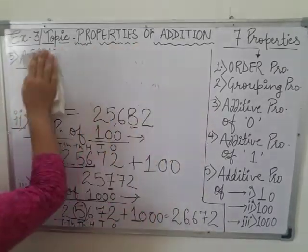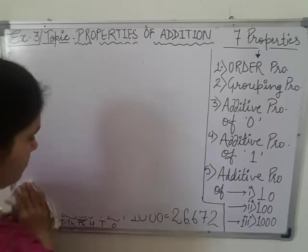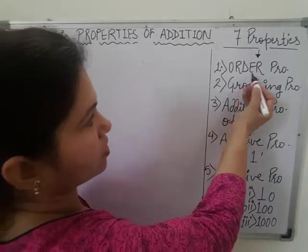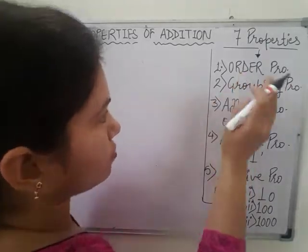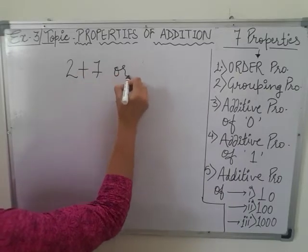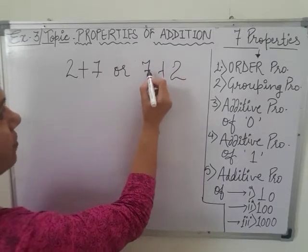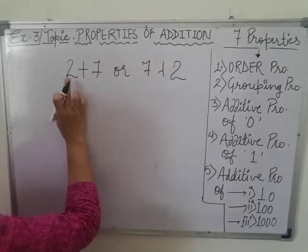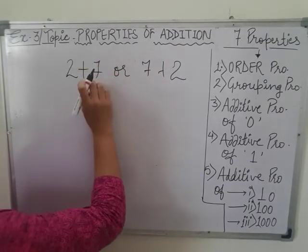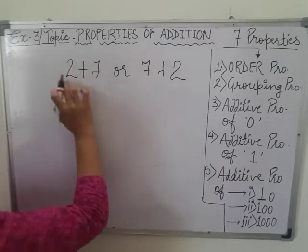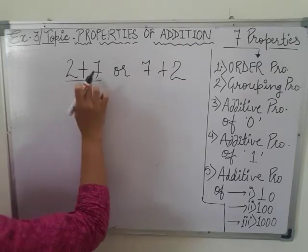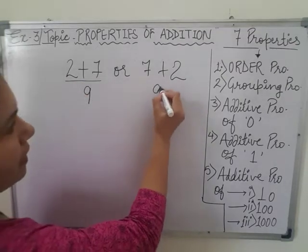Now let's have a revision of all the properties. Our first property is order property. According to this property, if we are taking any number in any order, then the answer will remain the same in both conditions. Suppose we are having 2 plus 7 and in the second term, the second number is in first place and the first number is in second place. So there will be no change in the answer — 2 plus 7 is 9 and 7 plus 2 again is 9.